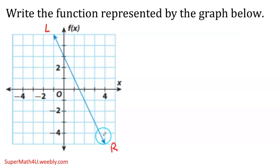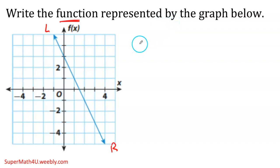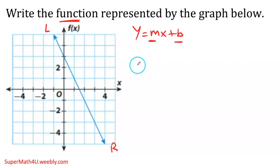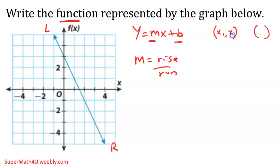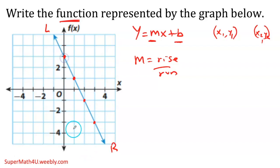The question says: write the function represented by the graph. That's just a different name for the equation — it's the same thing. Since they don't specify a form, we assume slope-intercept form. I need the slope and the y-intercept. Because I have the graph, I can use rise over run. I want to choose two points that are touching the corners of the grid.